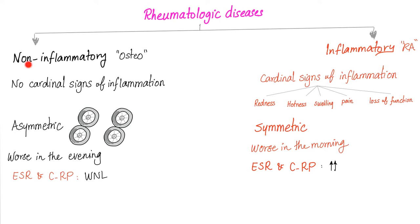Let's compare between non-inflammatory arthritis, such as osteoarthritis, and inflammatory arthritis, such as rheumatoid arthritis. In non-inflammatory, there are no cardinal signs of inflammation. In inflammatory, we have the cardinal signs: redness, hotness, swelling, pain, and loss of function.